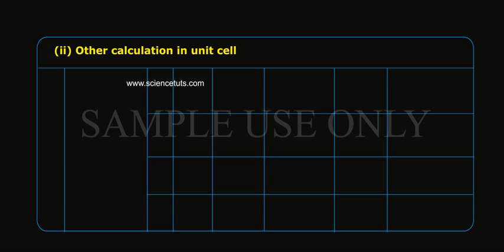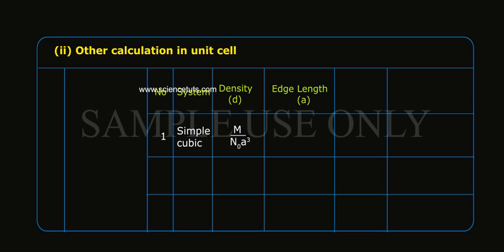Other calculations in unit cell: Number 1, System Simple cubic, density d equals M by N₀a³, edge length a equals 2R, radius R equals a by 2, distance between two spheres equals R.